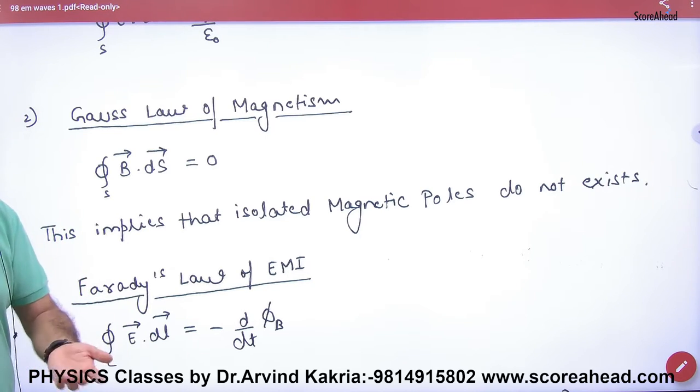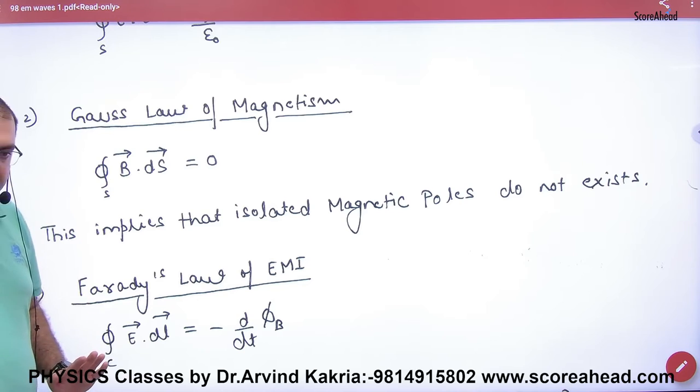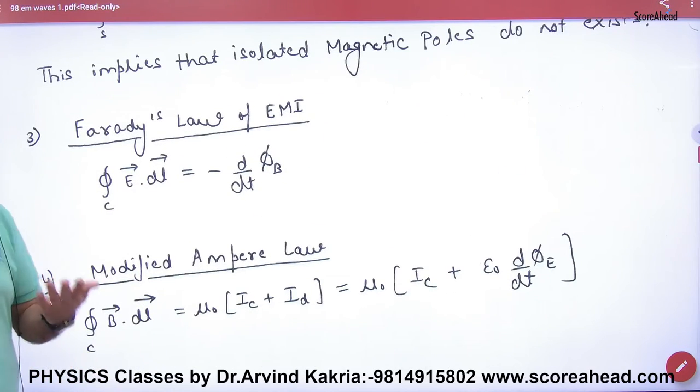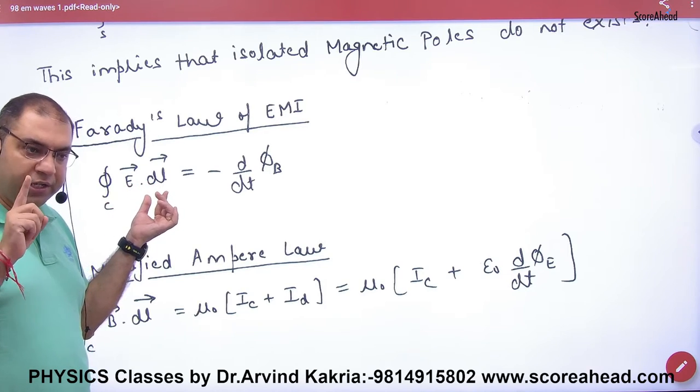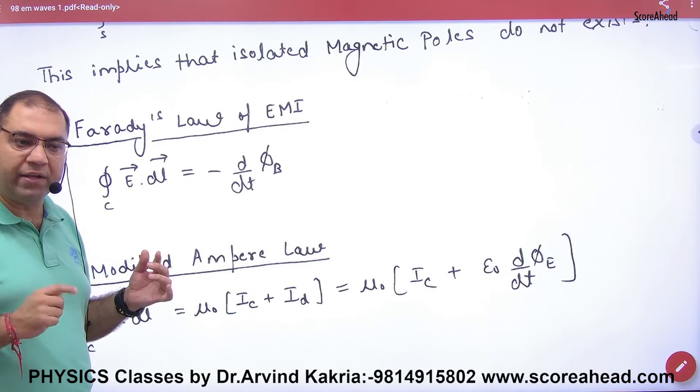Next equation is Faraday's law. What was done in Faraday's law? Induced electric field which was E.dl, it was minus d phi by dt. So EMI Faraday's law.